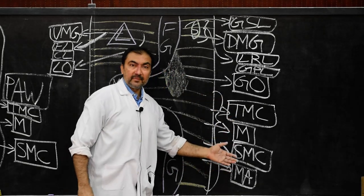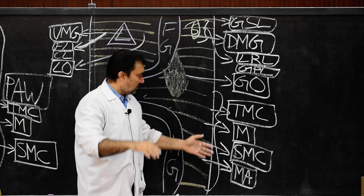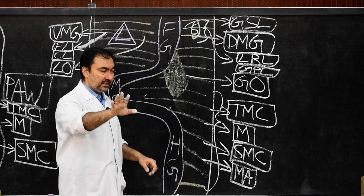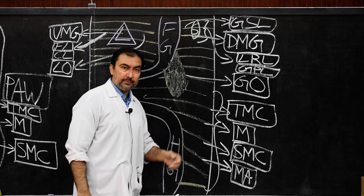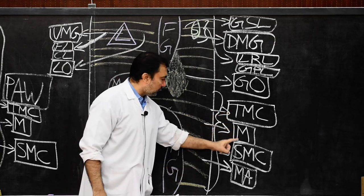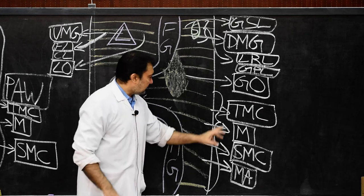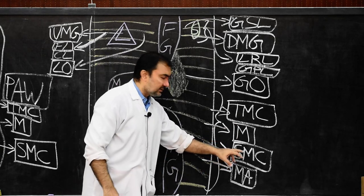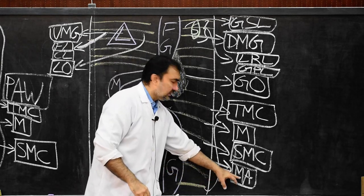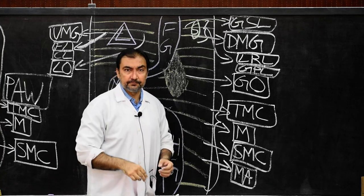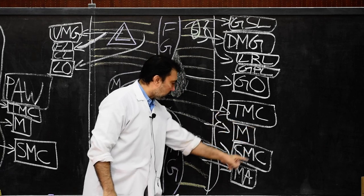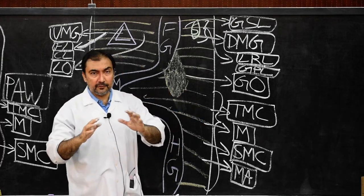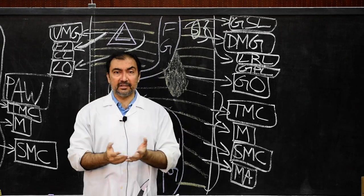These peritoneal folds develop from the dorsal mesogastrium connecting the midgut and hindgut with the posterior abdominal wall. They are: the transverse mesocolon covering the transverse colon, the mesenteries covering the coils of jejunum and ileum, the sigmoid mesocolon covering the sigmoid colon, and the mesoappendix covering the vermiform appendix. With this, we have understood the first segment of the peritoneal cavity. Here we end Part 1 of the peritoneal cavity. Thank you very much.